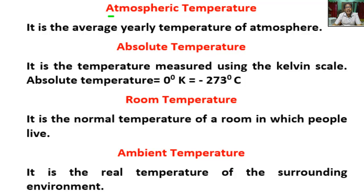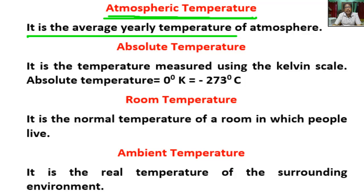What is atmospheric temperature? It is the average yearly temperature of an atmosphere — the average temperature of the atmosphere at Earth's surface. Atmospheric temperature is a measure of temperature at different levels of the Earth's atmosphere.